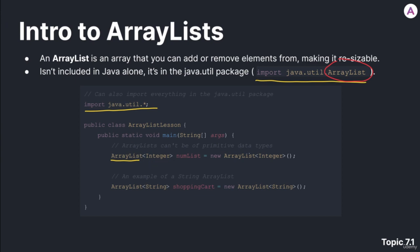Now, ArrayLists can't be of primitive data types — they have to be references. So if we want to make an int, we can't use int. Instead, we have to use a capital-I Integer, as we do here.